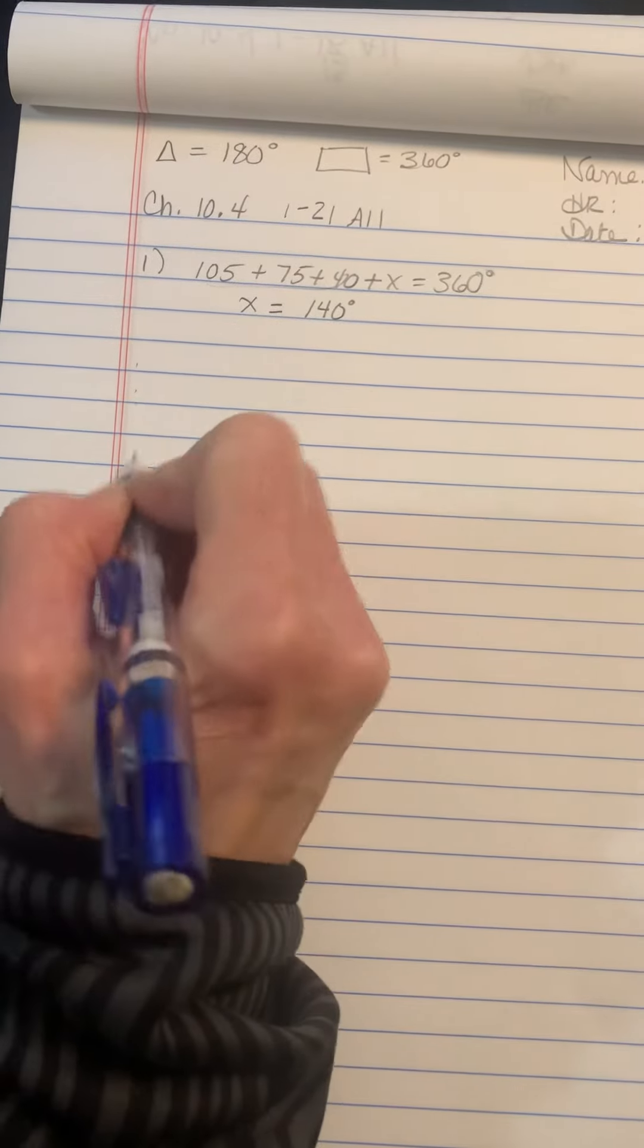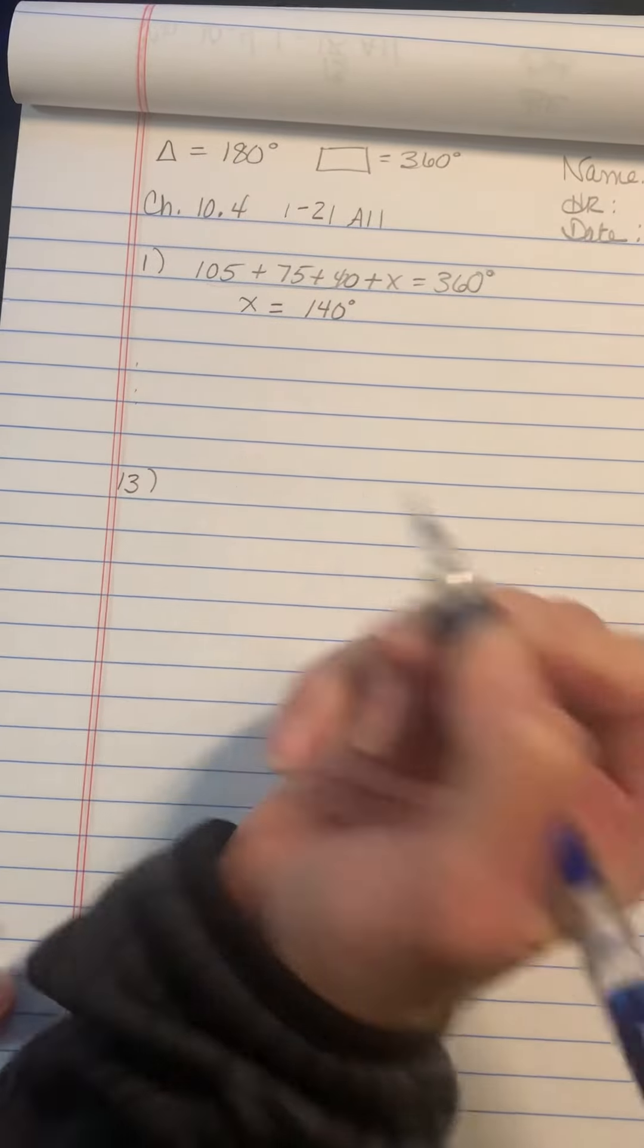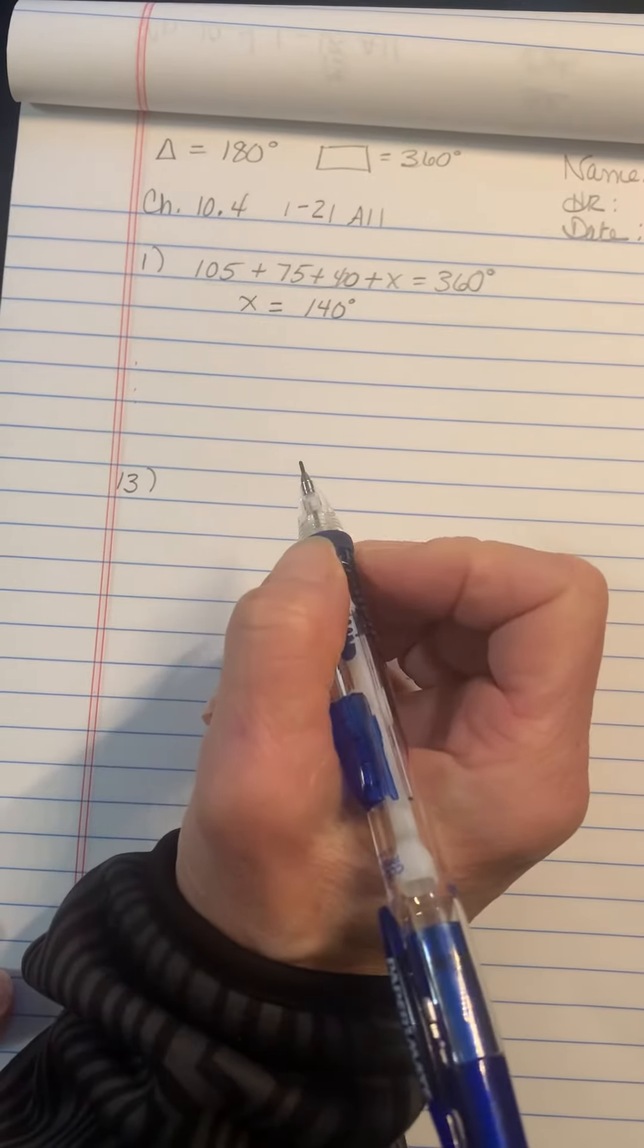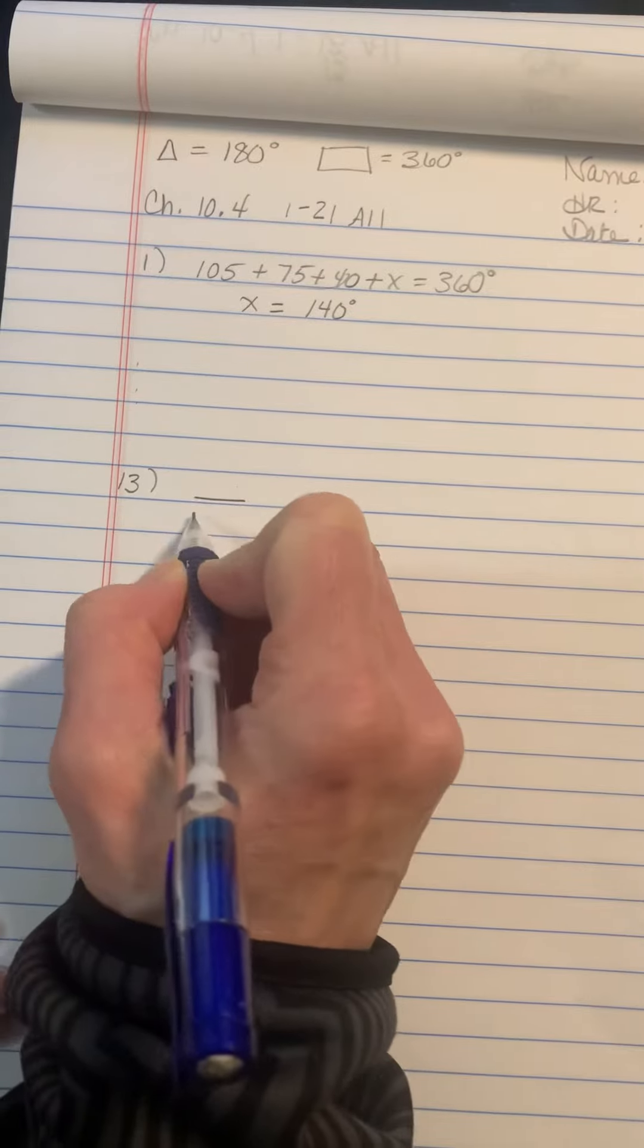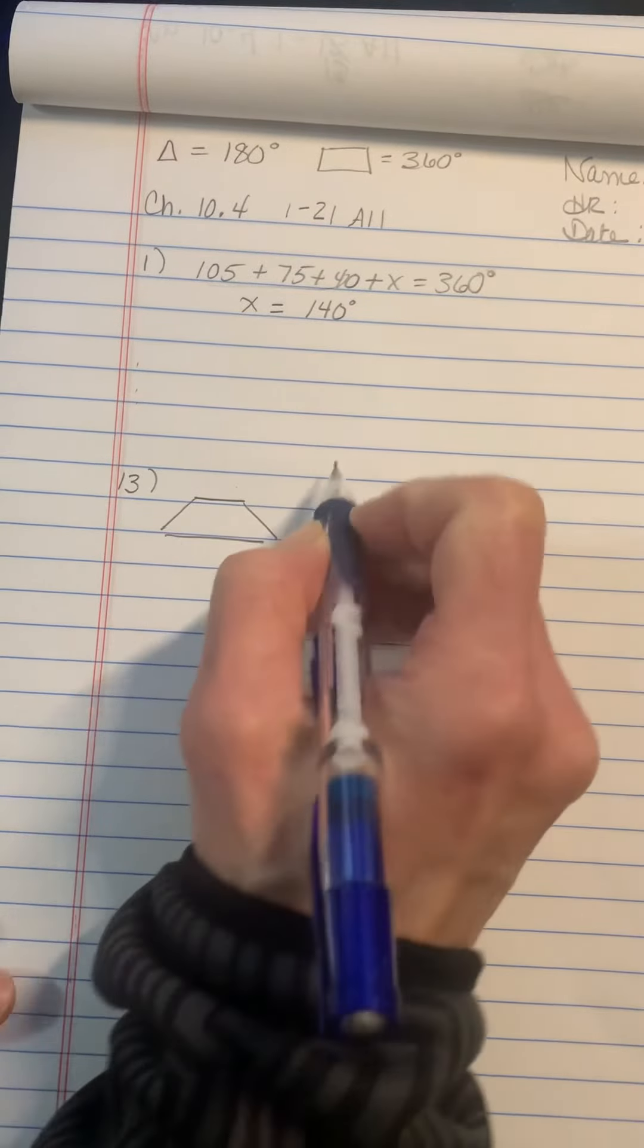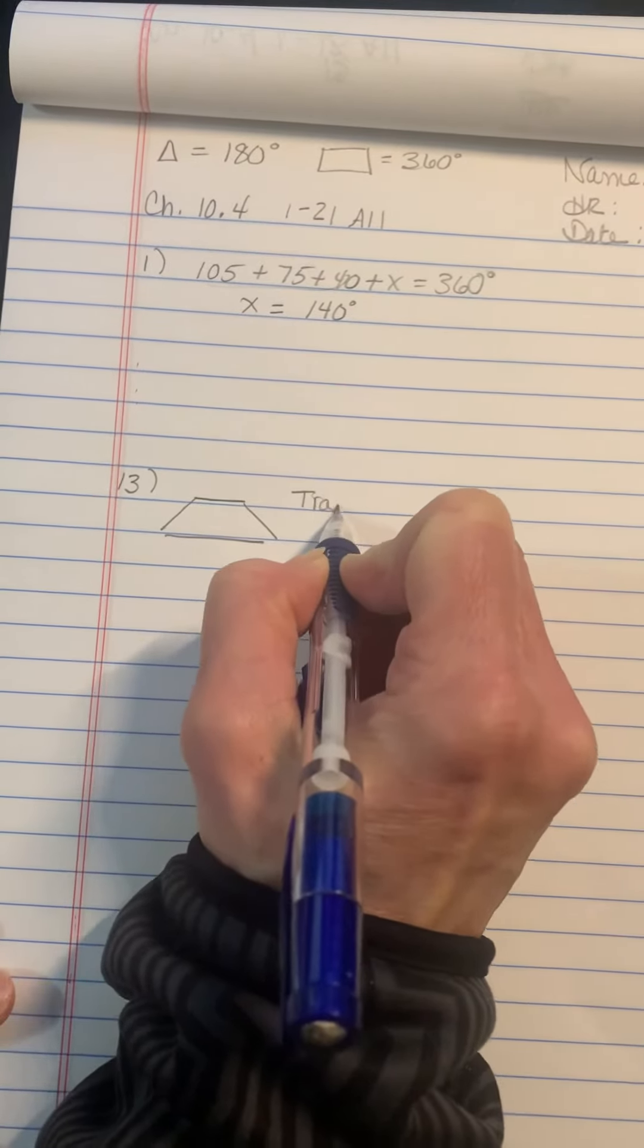Then when you get to question number 13, it's classifying the quadrilaterals that best describes it. So like the first one looks like this, and you're just going to call it a trapezoid.